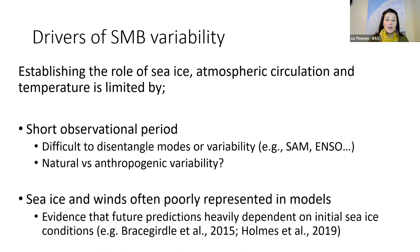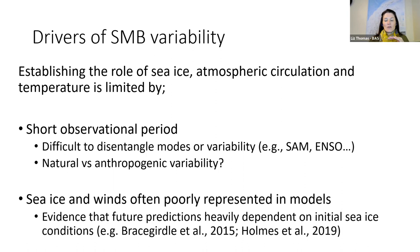Establishing the drivers of this variability is really important for future predictions. The observational record isn't long enough to separate ENSO periods or different phases of SAM, and it's too short to examine natural variability. It's important not only to focus on what's been happening under anthropogenic forcing, but also what was happening before — what's the natural variability and the real baseline. Work from Tom and others shows how important this baseline is: initial conditions for things like sea ice and winds are really important for future predictions.